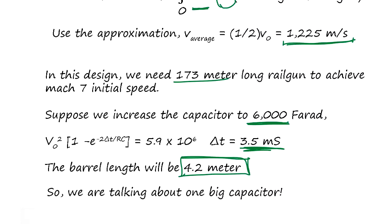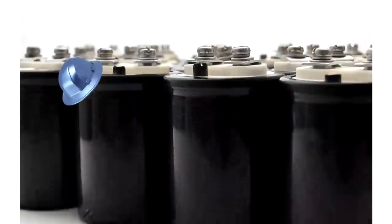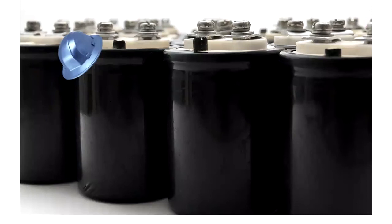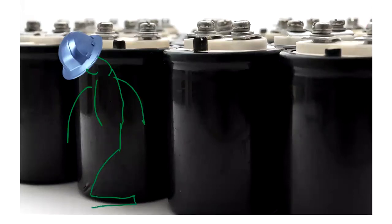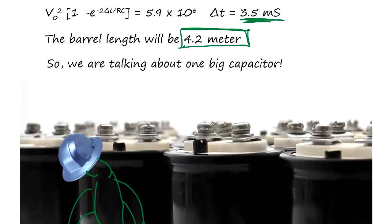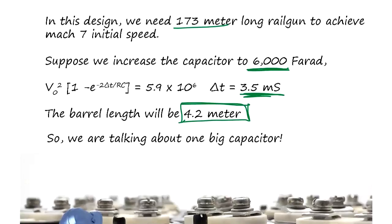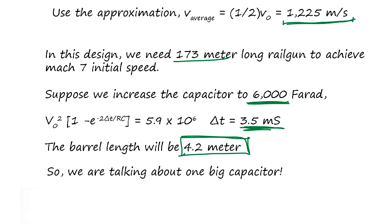You have no idea how big a 6000-farad capacitor is — it's enormous, roughly the size of a kneeling human. That's why the railgun can't be carried around easily; it has to be mounted on a ship or large truck. You can achieve about a 5-meter barrel length, but you need that 6000-farad capacitor.